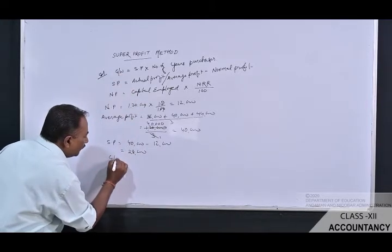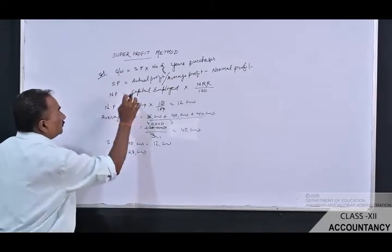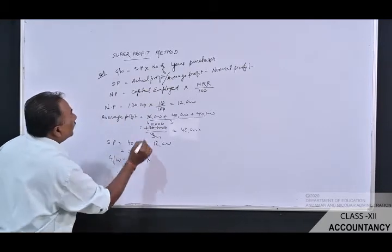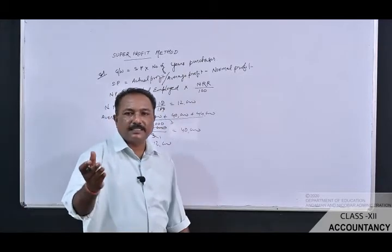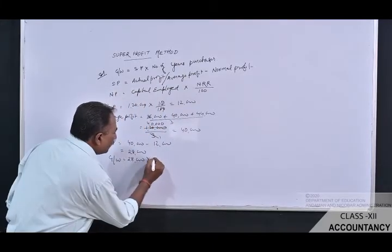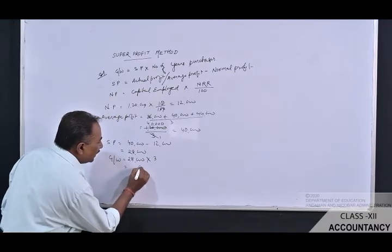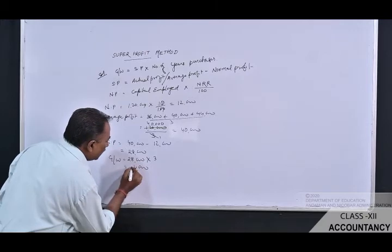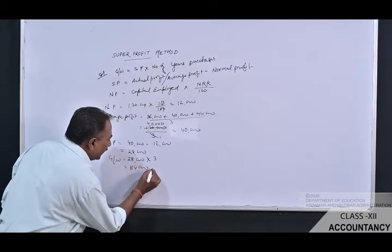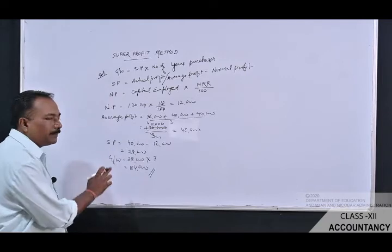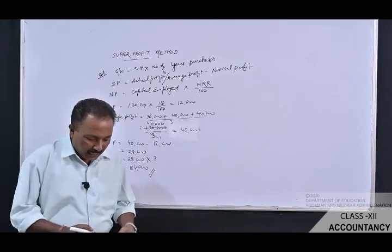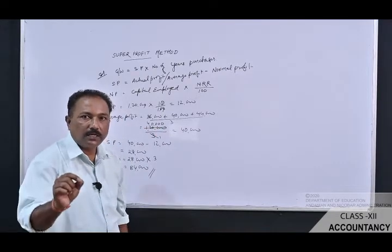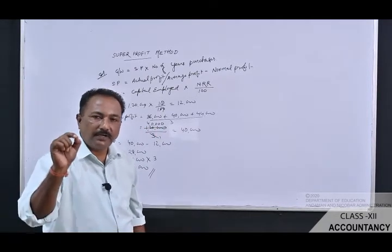Now calculate goodwill: Goodwill = Super Profit × Number of Years' Purchases = ₹28,000 × 3 = ₹84,000. So ₹84,000 is the amount of goodwill of the entire firm. We have now seen how to find goodwill under the super profit method.